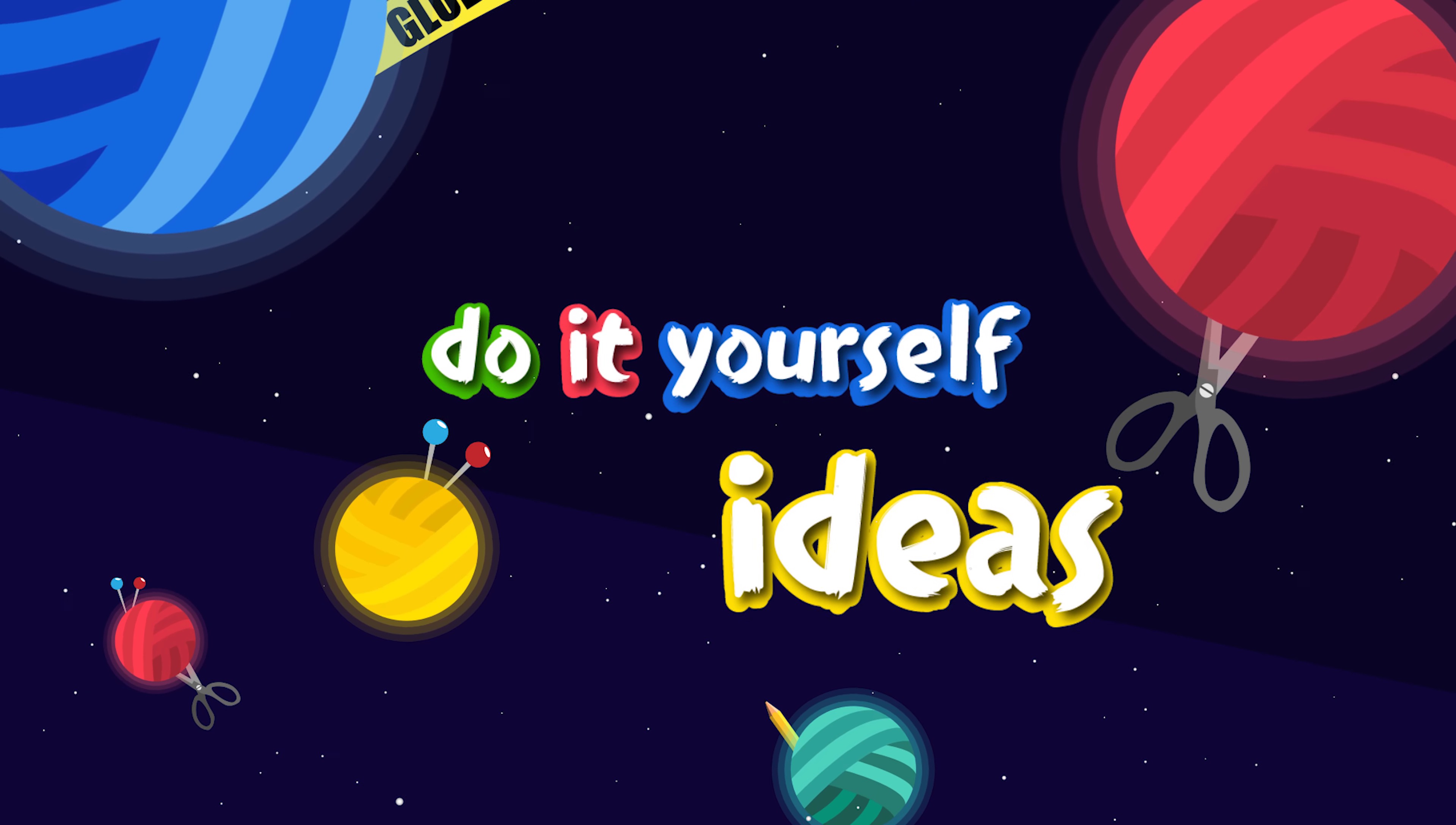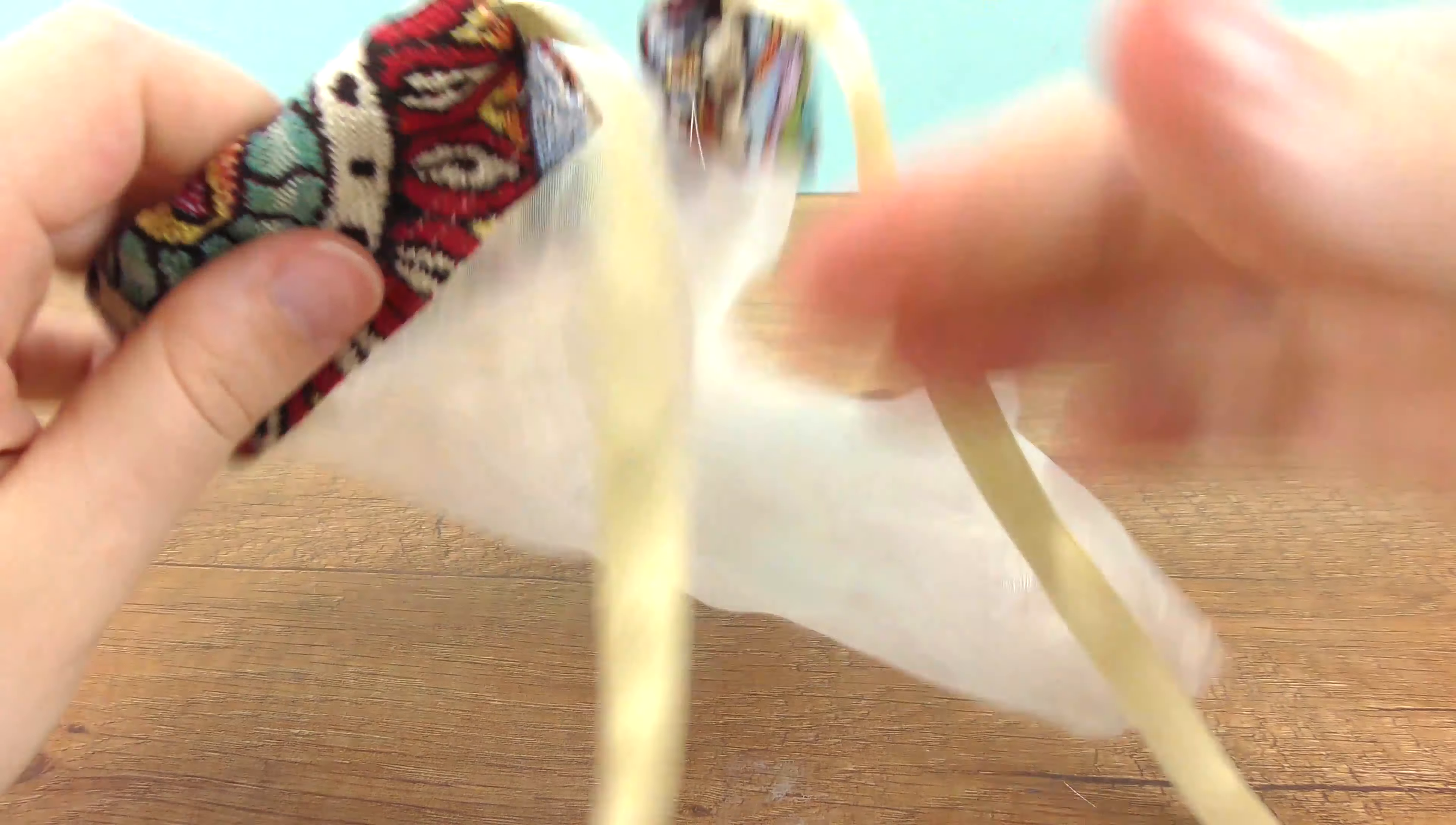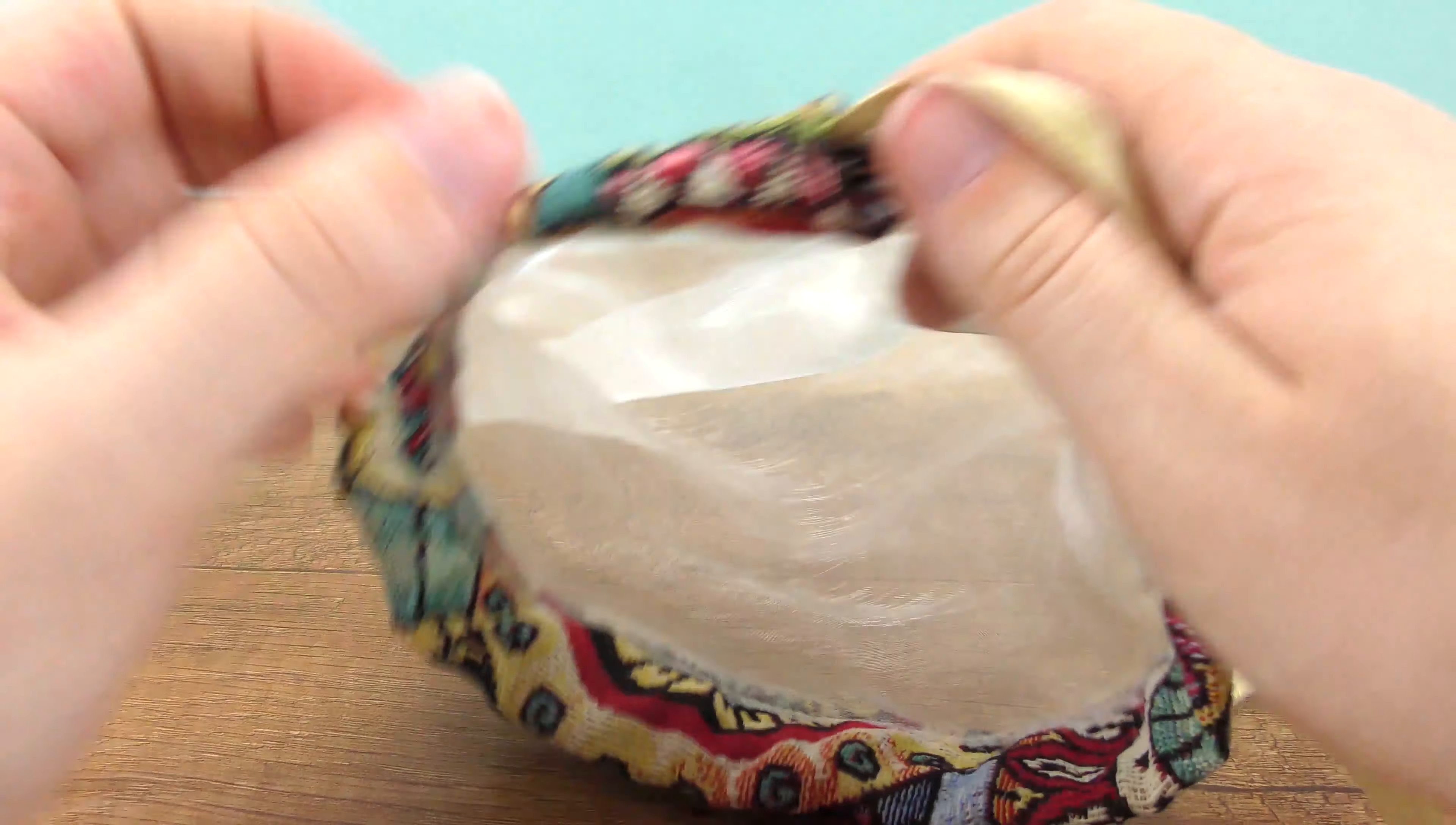Hi everyone, welcome to DIY Ideas. Today I want to show you a really cool eco-friendly project. I wanted to show you how you can make a baggie for shopping. These are usually used for veggies and fruits, but you can use them for pretty much anything else as well.